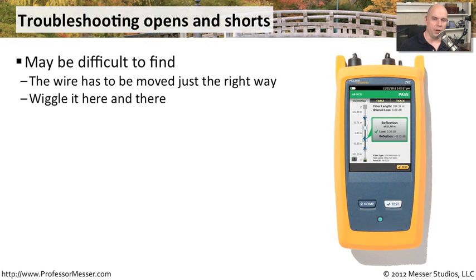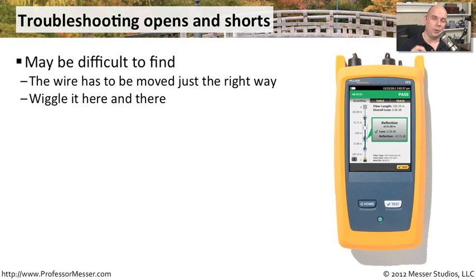If you've ever had a short or an open in your network, or maybe in a headphone cable, you'll notice that if you wiggle that cable, you can start to hear the differences as that wire moves back and forth and either is shorted or is opened inside of that cable. Wiggling a cable may not be the best or most efficient way to find these problems, but if you have a way to look at a link light and start gently moving Ethernet cables, you may find one that turns off the light and back on whenever you happen to move that particular wire.